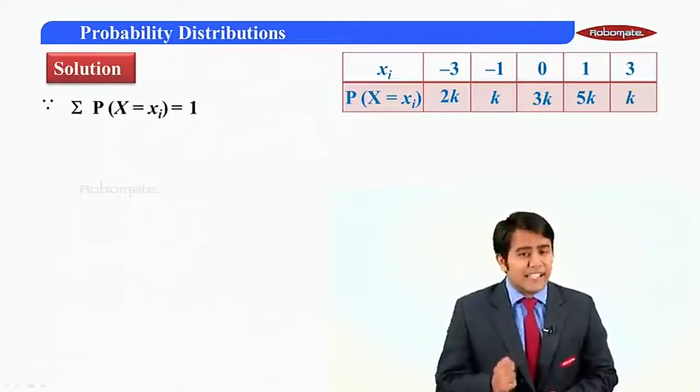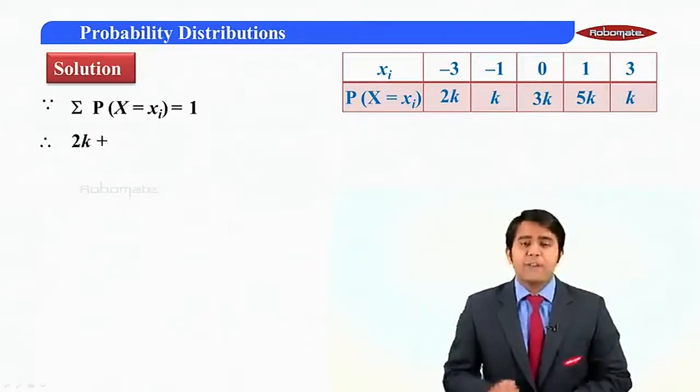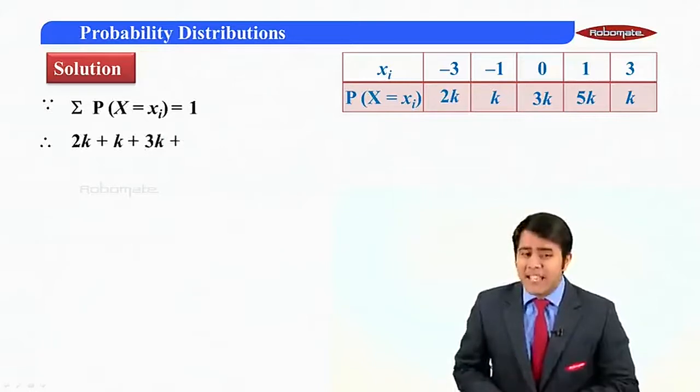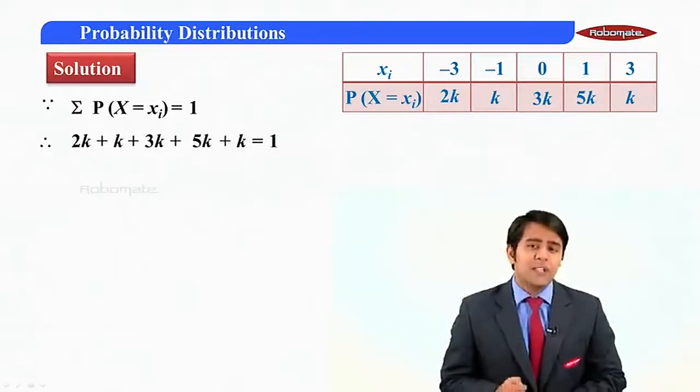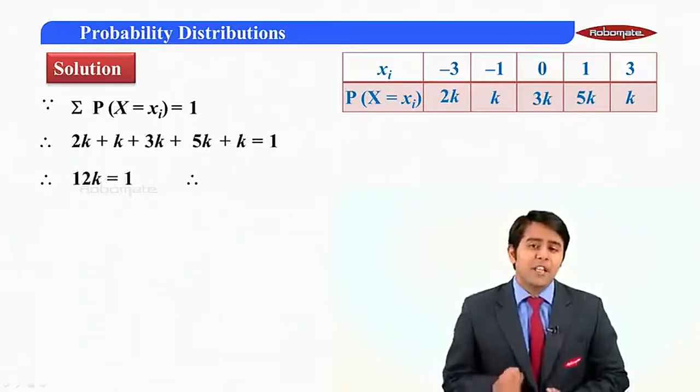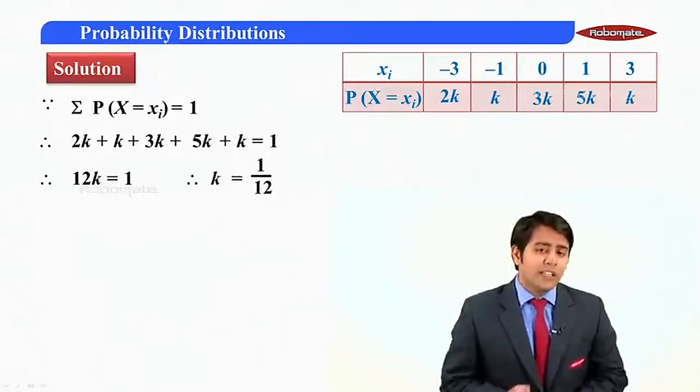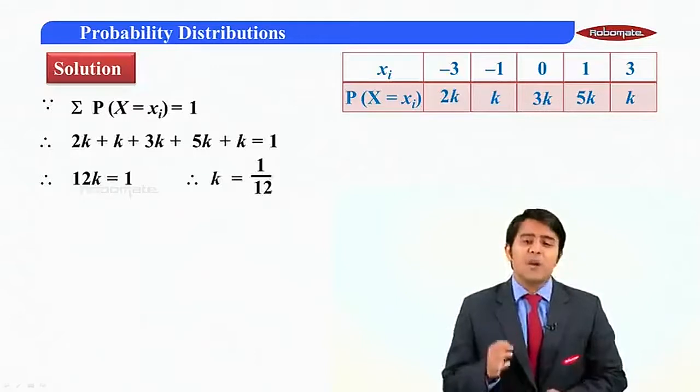Therefore, summation p of x is equal to 1. Therefore, I can say that 2k plus k plus 3k plus 5k plus k is equal to 1. On adding these values, I get 12k equal to 1. Therefore, k is 1 by 12.